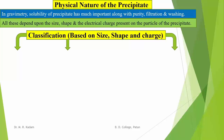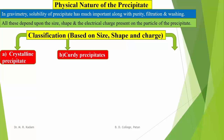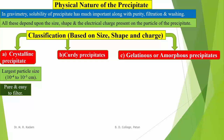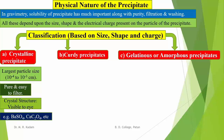Based on size, shape, and electric charge on the surface, precipitates are divided into three types: first, crystalline precipitates; second, curdy precipitates; and third, gelatinous or amorphous precipitates. Crystalline precipitates have the largest particle size, lying between 10⁻⁴ to 10⁻³ centimeters. They are relatively pure and easy to filter, and their crystal structure is quite visible to the naked eye. Examples are barium sulfate, calcium oxalate, and lead sulfate.